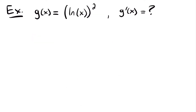For our next example, g(x) equals the natural log of x, quantity squared, and we want to find g prime of x. You might be tempted to move the power to the outside using a log property, but be careful — you cannot do that here because this power is not inside the natural log function. That property only applies when you have the natural log of some function to a power, not when the natural log itself is raised to a power.